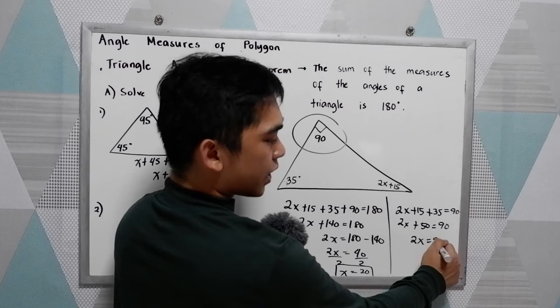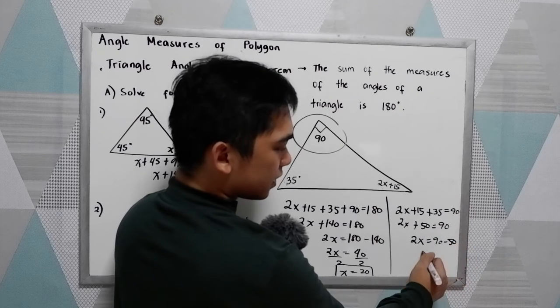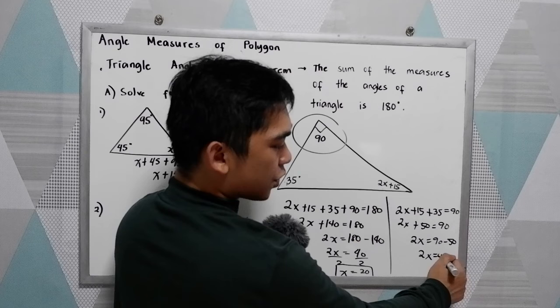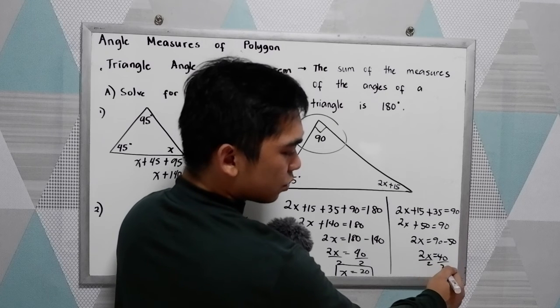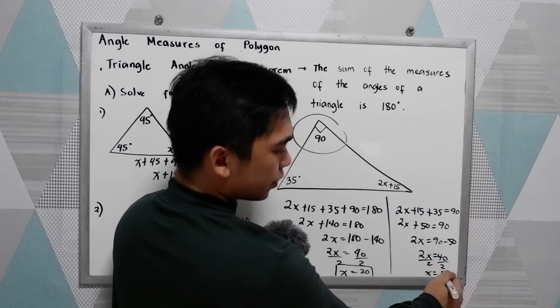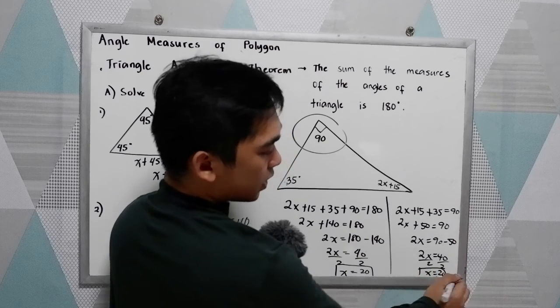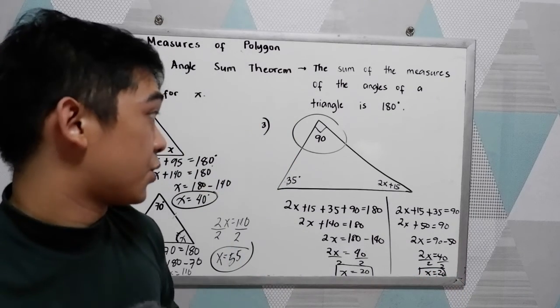So 2x is equal to 90. Move to the right. Minus 50. So 2x is equal to 40. Divide by 2. x is equal to 40 divided by 2, 20. Still, we will come up with the same answer.